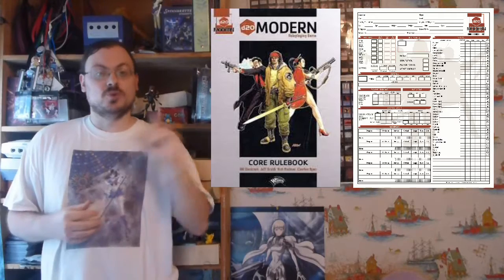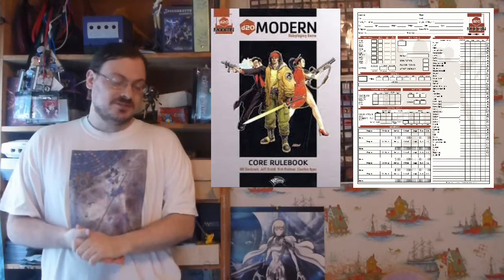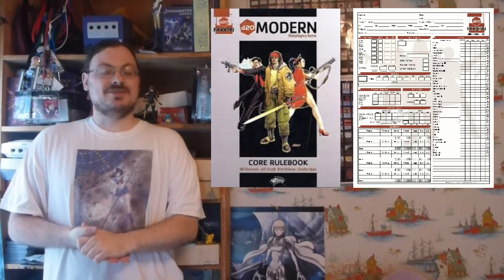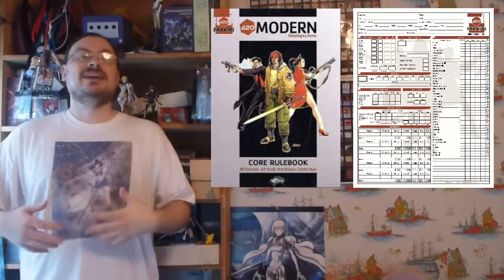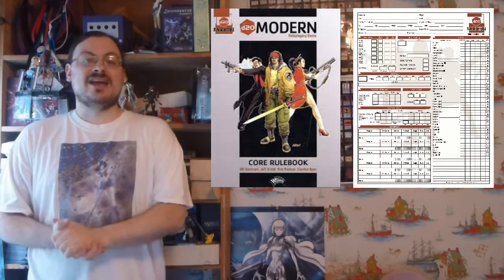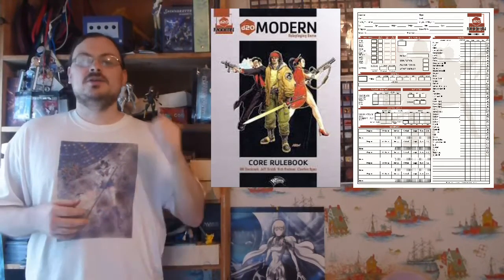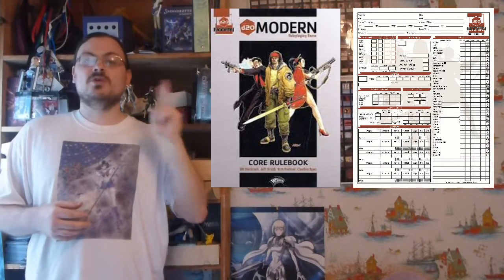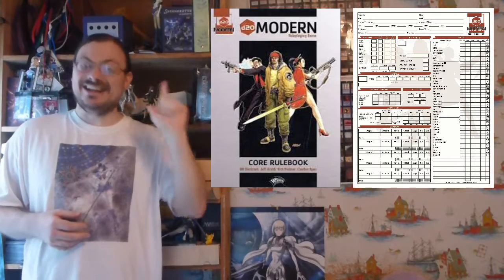D20 Modern's point-buy gives you 25 points, and it gave value for all the ability scores you could possibly have — 8 was 0 and everything else cost you. They also gave a standard array. It's in fact very similar to the standard array that 5th edition Dungeons & Dragons has: 15, 14, 13, 12, 10, and an 8.